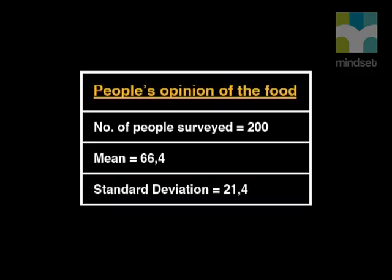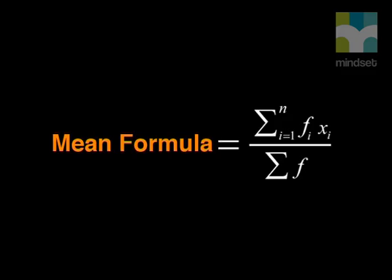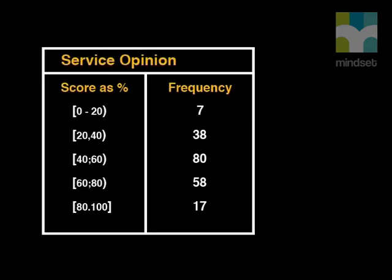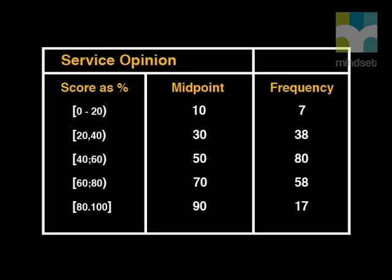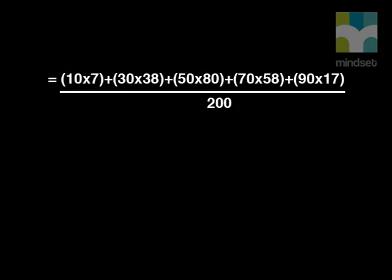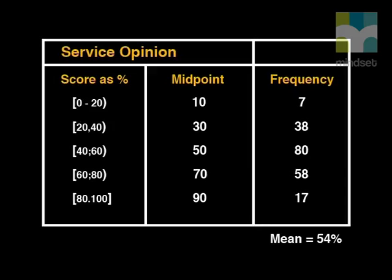Let's quickly go over the mean and standard deviation for the service. Using this mean equation for grouped data, we summed the product of the frequencies and their respective values, and divided them by the sum of the frequencies. Let's apply this to our data of percentage scores for service. Here we take the midpoint value of each interval and multiply this by the frequency. With all the information in the equation, we can use our calculator to solve this, and we get a mean of 54%.